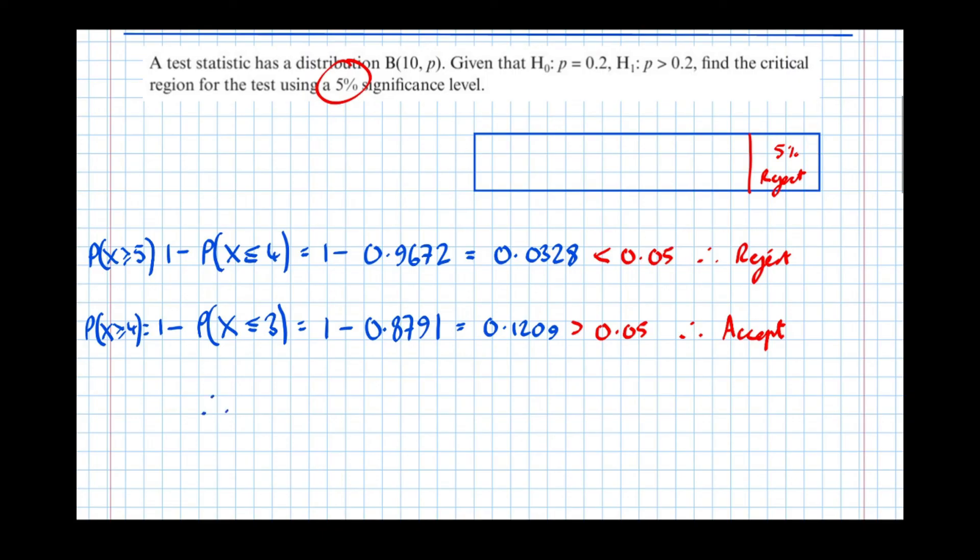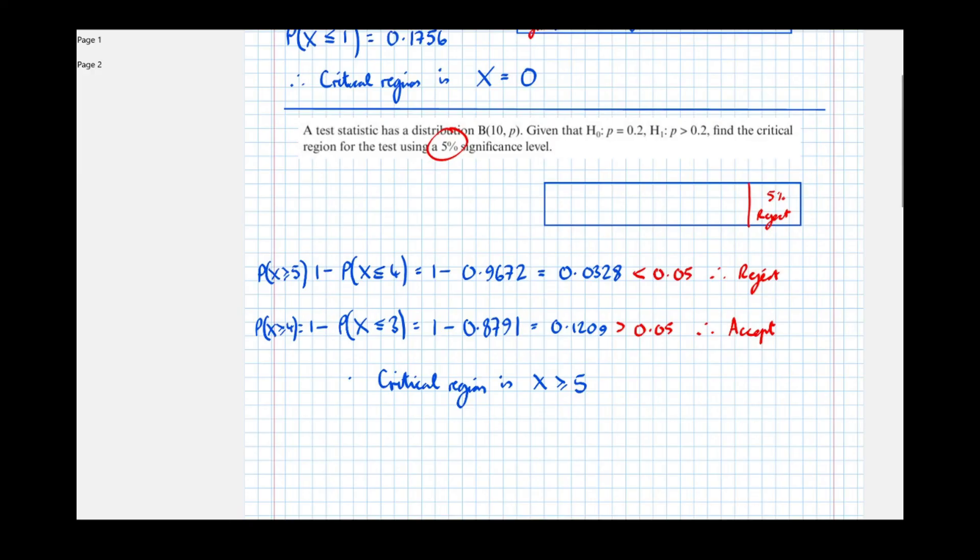So you've got that. Therefore, critical region is, and we've shown that it's the probability that x is greater than or equal to 5. So the critical region is x greater than or equal to 5. Must write it like that. And that's that.